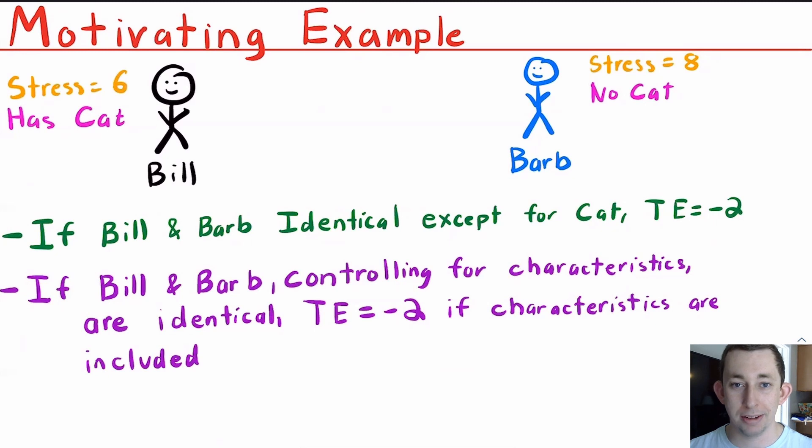So if we could control for the stress level of Bill and Barb's job, and they're identical except for that characteristic, that would be selection on observables with controls, and we would still get this estimate of minus 2. Because we could control for the stress level of their job, we could control for everything that makes Bill and Barb different. After we control for all of those things, assuming we can observe all of those things, all of those factors that affect your treatment and your outcome together, then your treatment effect would be minus 2, assuming we put those controls into our OLS regression.